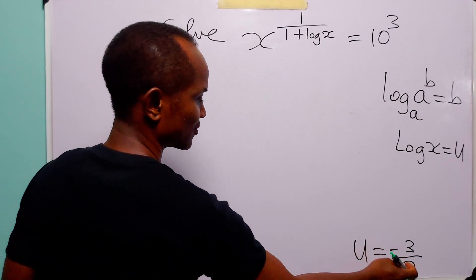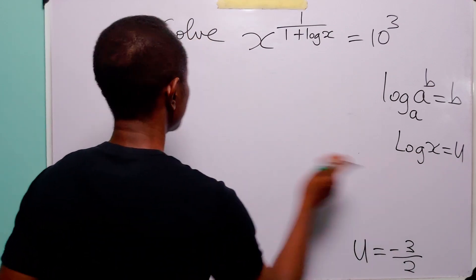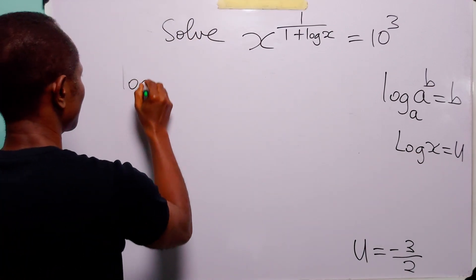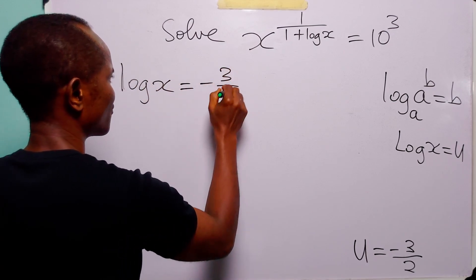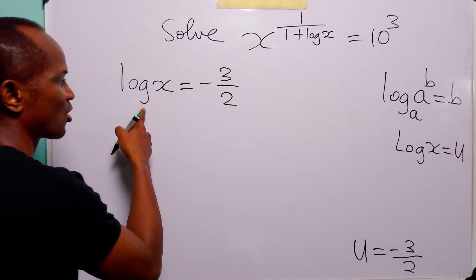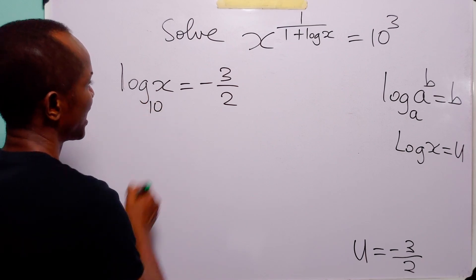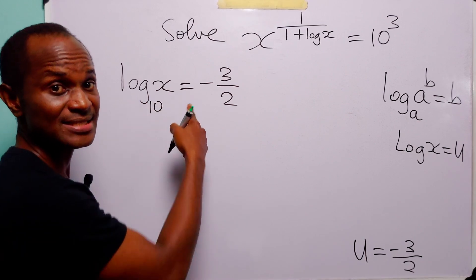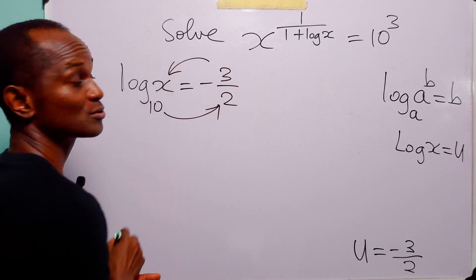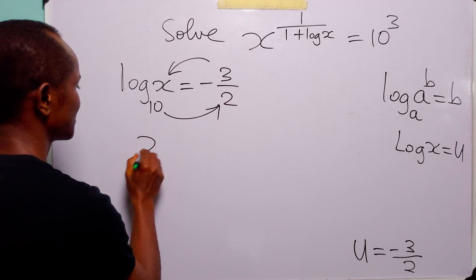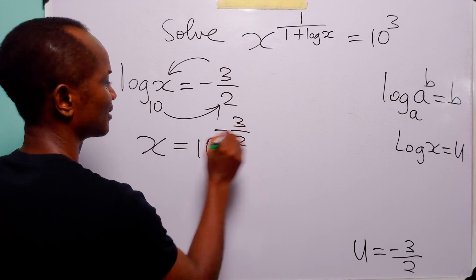Now that we have calculated u to be equal to minus 3 over 2, let us remember that u is equal to log x. So ultimately we have log x is equal to minus 3 over 2. Remember that the base of this logarithm is 10, and when we have a statement like this it simply means 10 to the power (minus 3 over 2) is equal to x — that is, x is equal to 10 to the power minus 3 over 2.